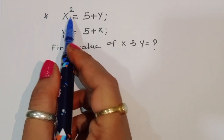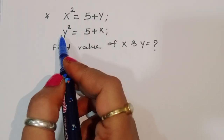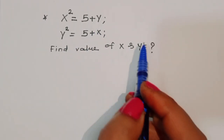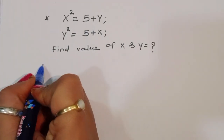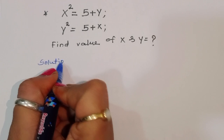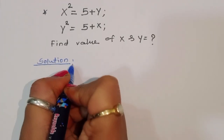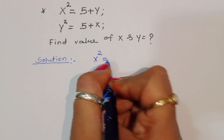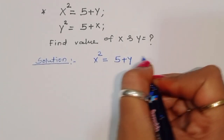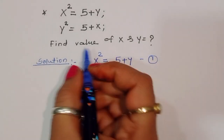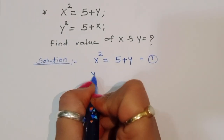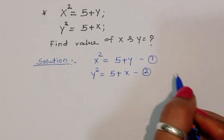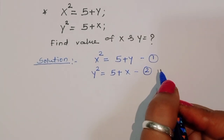The question is given: x² = 5 + y (equation 1) and y² = 5 + x (equation 2). We have to find out the values of x and y. Let's see the solution.